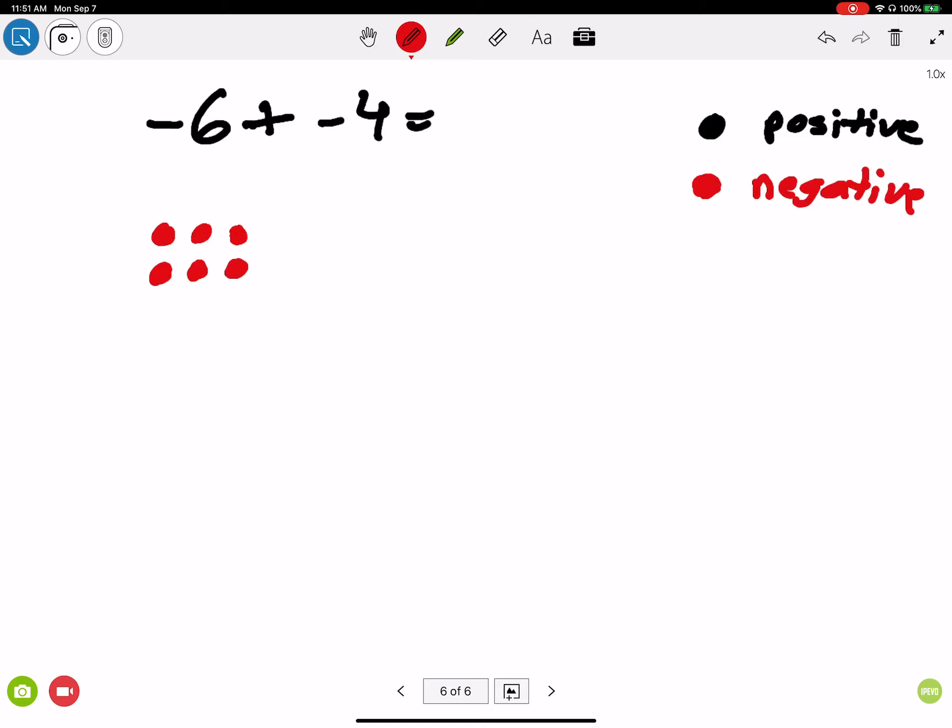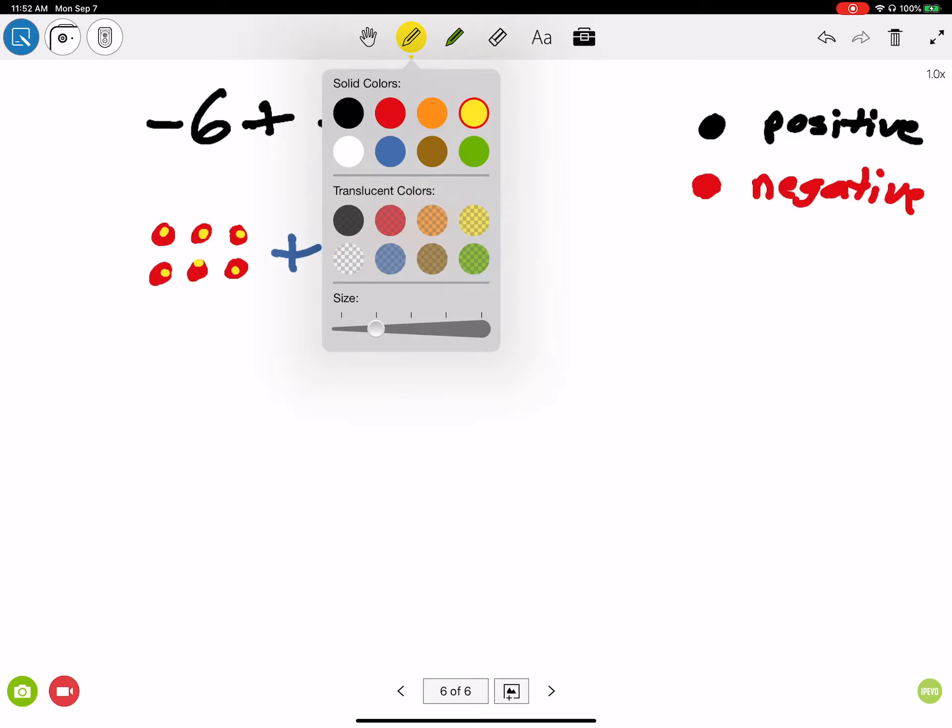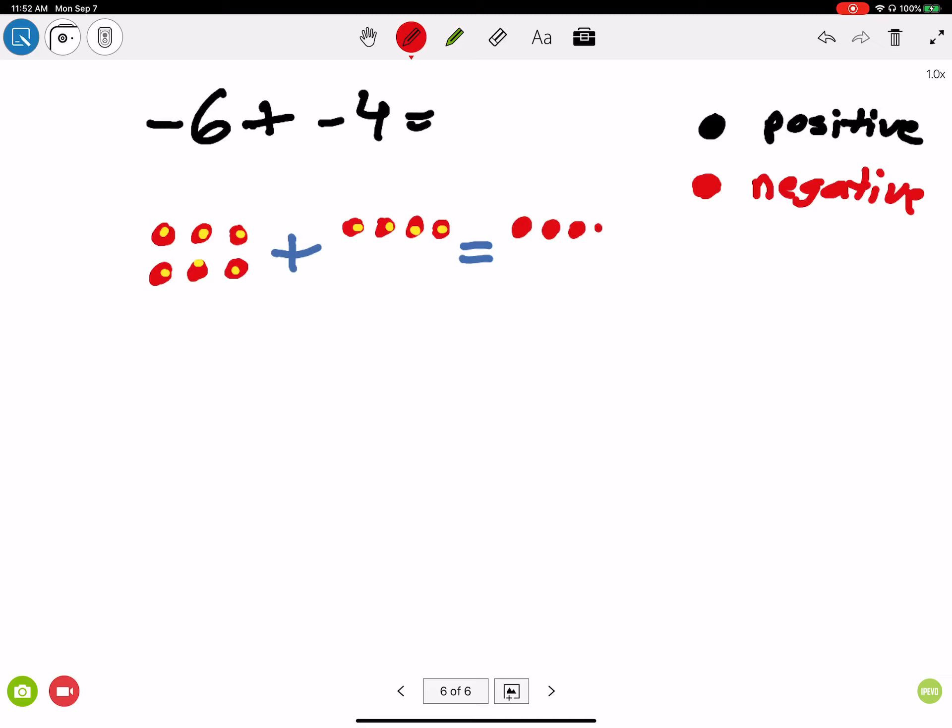And then let's do plus negative 4: 1, 2, 3, 4. So what happens here? Well, all I have to do is put all my negatives together. I have negative 5, let's make it yellow: 1, 2, 3, 4, 5, 6, 7, 8, 9, 10. So my answer becomes negative 10.